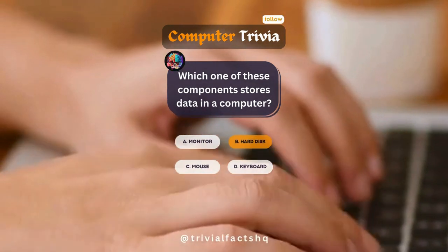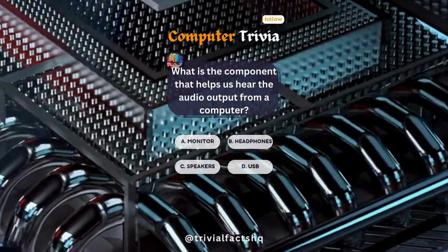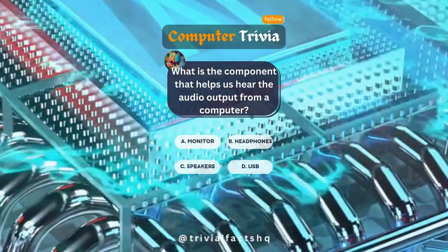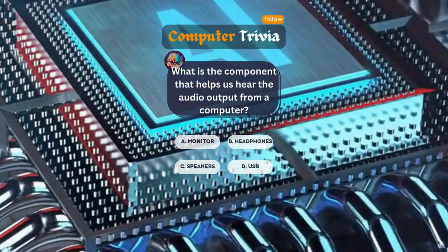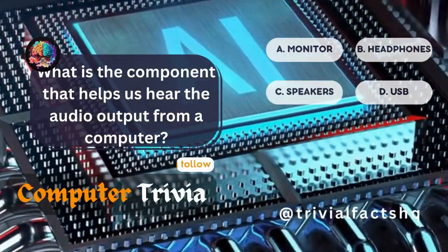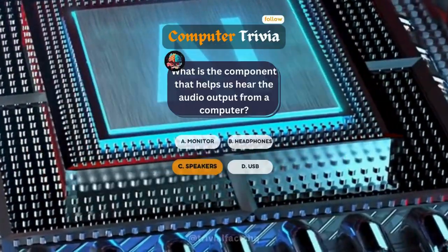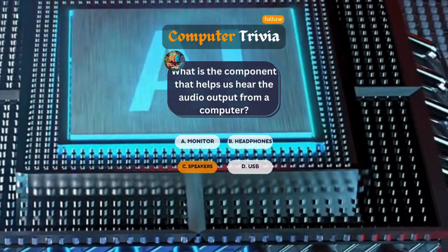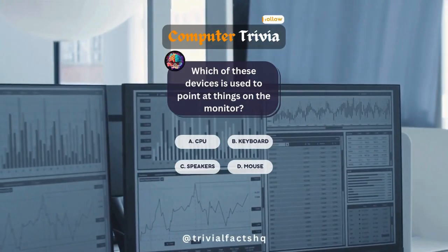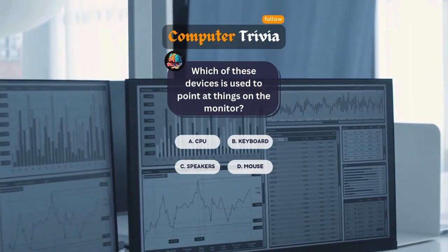Option B is correct. What is the component that helps us hear the audio output from a computer? Option C is correct. Which of these devices is used to point at things on the monitor?